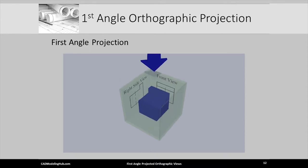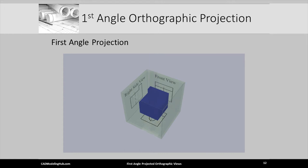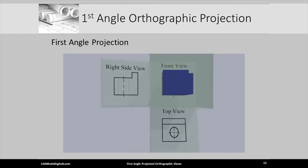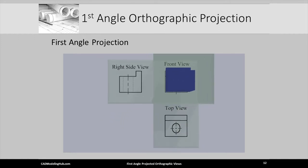We reposition our viewing direction to look down from the top of the doorstop. The visible surfaces are highlighted white and projected down to the wall of the glass cube — this 2D view is given the label top view. Folding the right and top views back into the plane of the front view shows their position and alignment with respect to the front view.